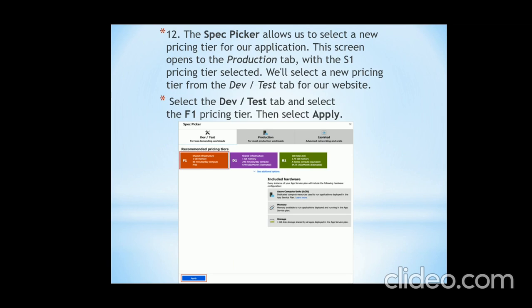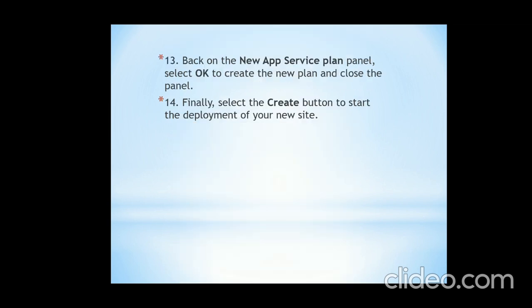The Spec Picker allows you to select a new pricing tier for your application. This screen opens to the Production tab with the S1 pricing tier selected. Select a new pricing tier from the Dev/Test tab for our website. Select the Dev/Test tab, then select the F1 pricing tier, and then select Apply. The F1 option is shown with an orange color box on the left-hand side. After choosing that, back on the new App Service Plan panel, select OK to create the new plan and close the panel. Finally, select the Create button to start the deployment of your new site.